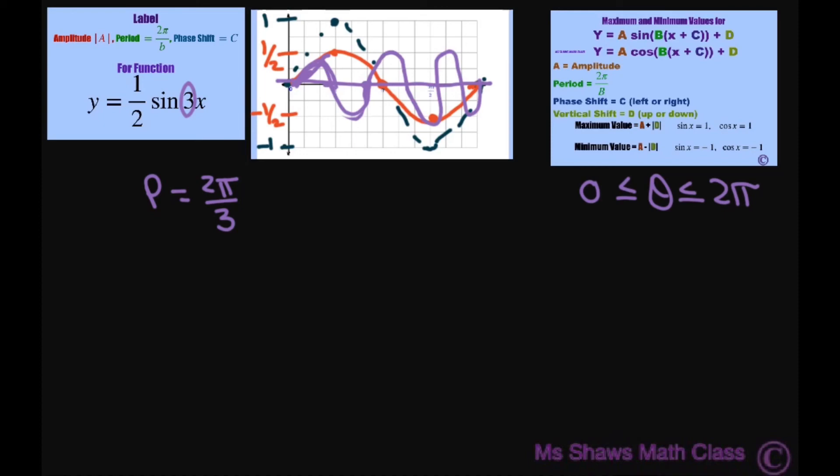Also, there is no phase shift, because you would write the phase shift is 0. Because you could write this as y equals one-half sine of 3x plus 0. So then you set that, so your phase shift. That means we're not shifting to the right or left. Phase shift is your horizontal shift. All right.